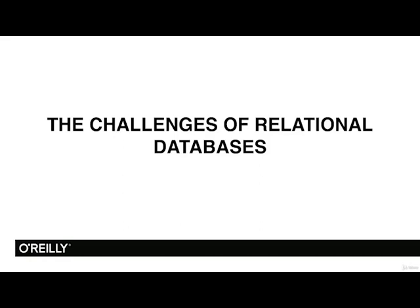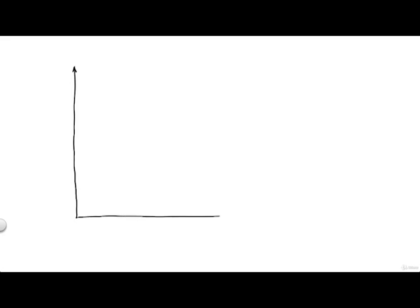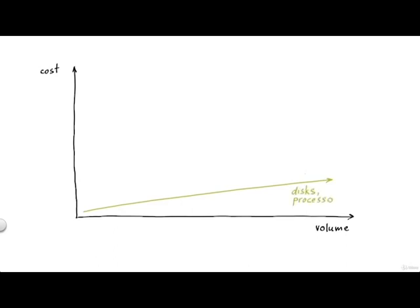Let's see some of the challenges with relational databases using a simple diagram. On one axis we show the volume of data we are trying to process, and on the other axis the cost of our database and equipment. If we look at the cost of equipment — storage space and processors — we see a fairly linear cost: if we need two times more space, we pay two times more. When it comes to CPUs, we don't get much faster CPUs than before, but we can get them in larger numbers. Multi-processor and multi-core systems are becoming the norm.